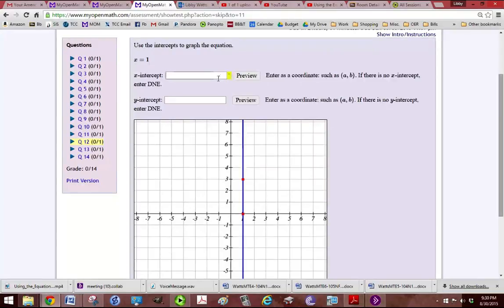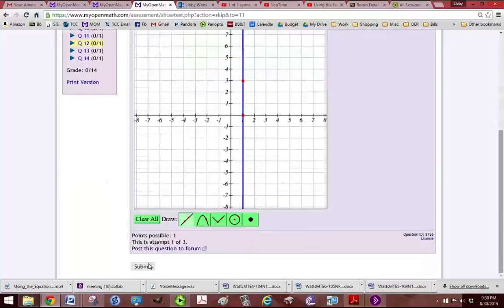And of course, the x-intercept is going to be 1, 0, and the y-intercept doesn't exist because it doesn't cross the y-axis anywhere, so let me just submit this one.